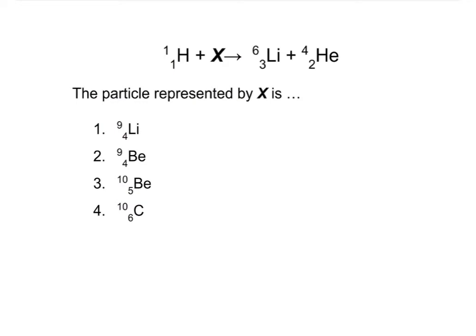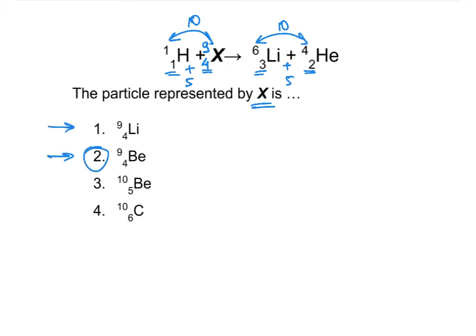Sample question: find the particle represented by X. The atomic numbers on the right add up to 5, so the atomic number on the left must also total 5, meaning X has atomic number 4. The mass numbers on the right add up to 10, so X has mass number 9. Two answers fit — but we choose the one representing beryllium, element number 4. Lithium is element number 3, so that option is an incorrect isotope notation.